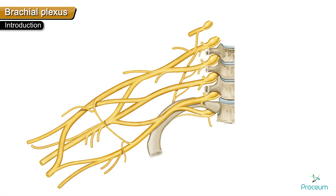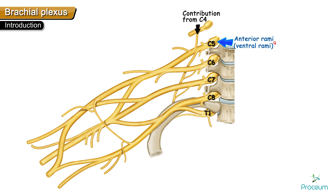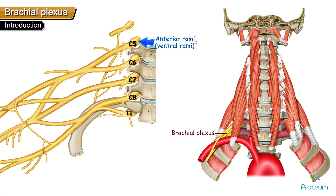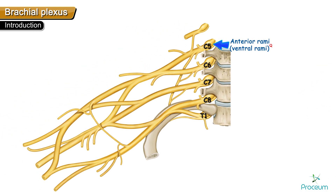The brachial plexus is a network of nerves that supplies the upper limb. It is formed by the anterior rami or ventral rami of spinal segments C5 to T1. If the C4 nerve root is involved, we call it the prefix type, and if T2 is involved, we call it the postfix type. The roots emerge between the scalenus anterior muscle and the scalenus medius muscle.